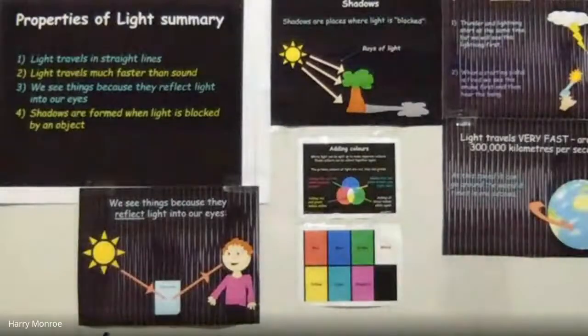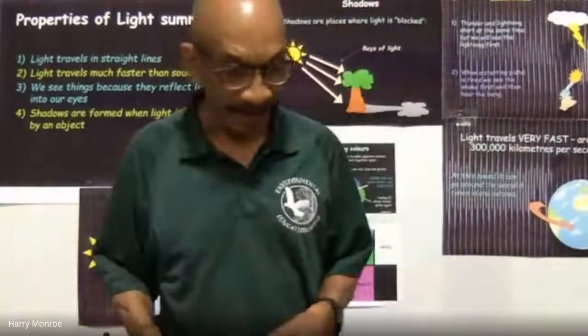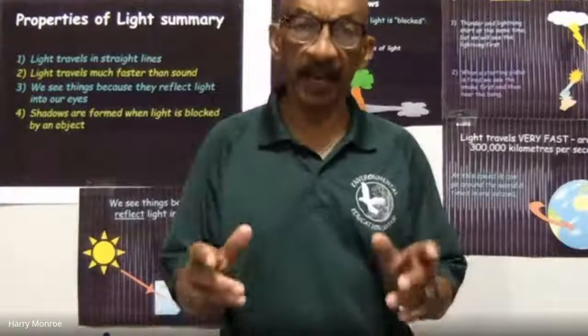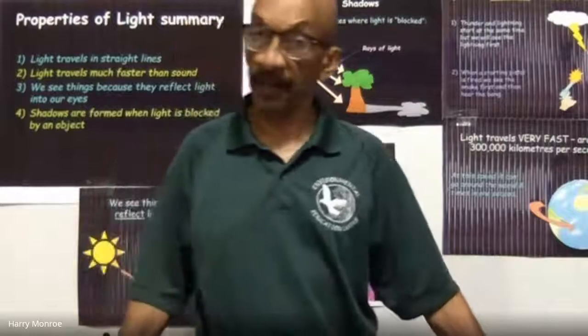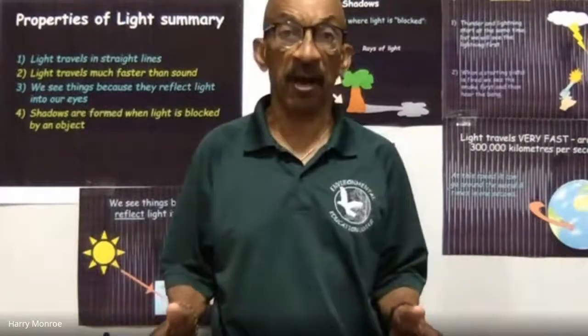Good morning, my name is Mr. Monroe. Now, light energy — we need that so that we can see. You heard Mrs. Fuller say that the sun is the ultimate or primary source of our energy here on planet Earth. It is also the ultimate source of light energy, because during daylight hours the sun is shining and it's bright all around us unless the sun rays are obstructed. Light energy is very important simply because it allows us to see.